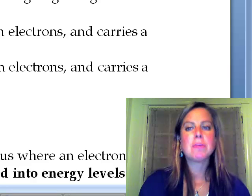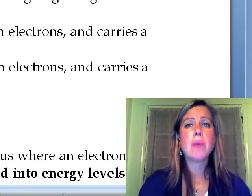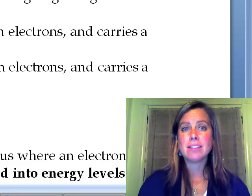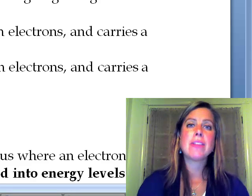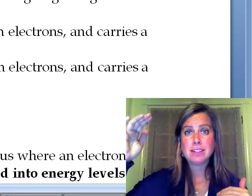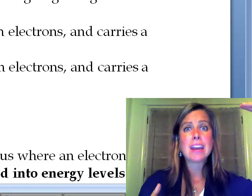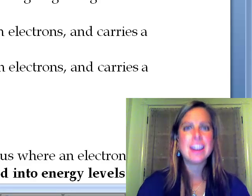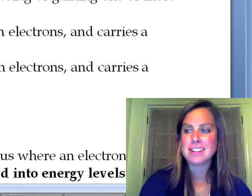The ones that have the same number of protons and electrons are neutral and have a charge of zero. There are going to be times when an atom gains or loses an electron, and that is when we call it an ion. An ion means it's either gained or lost an electron, and it's going to have a charge because it'll have more protons than electrons, or the opposite. The process of gaining or losing electrons is called ionization.